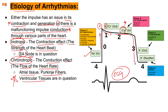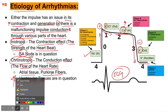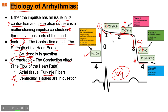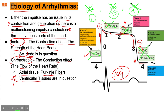Understanding where drugs act is important: sodium channel blockers act during phase zero, potassium channel blockers during phase one and three, and calcium channel blockers during phase two. So we have three groups of drugs for antiarrhythmics: sodium channel blockers, calcium channel blockers, and potassium channel blockers. How easy is that?